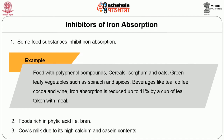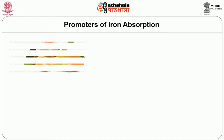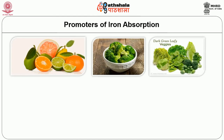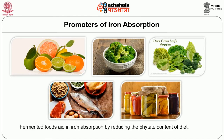Bran foods rich in phytic acid also interfere. Cow's milk, due to its calcium and casein content, interferes with iron absorption. The factors which facilitate iron absorption include ascorbic acid-rich foods like citrus fruits, broccoli, and other green leafy vegetables, as well as foods containing muscle protein. Fermented foods also aid in iron absorption since they reduce the phytate content of the diet.